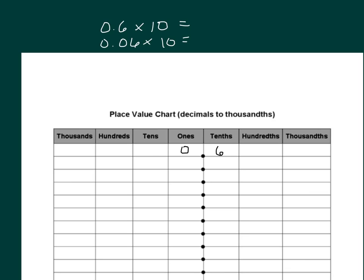We place 6 tenths into the place value chart. When we multiply by 10, those values get larger. So 6 tenths becomes 6 ones. And so we have 6 tenths times 10 equaling 6 ones.